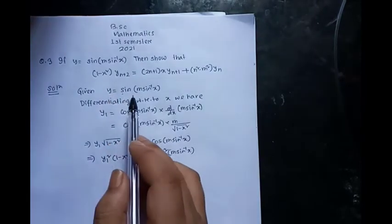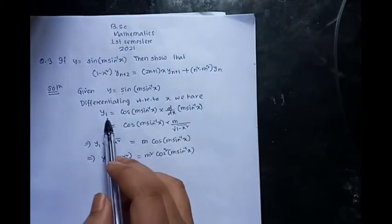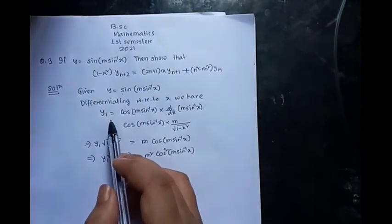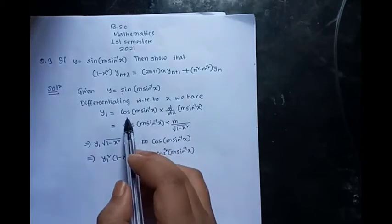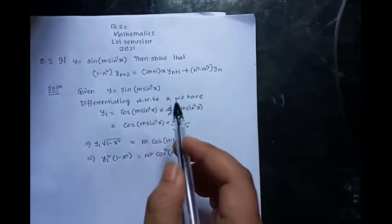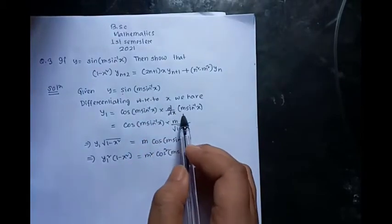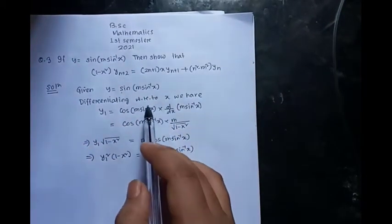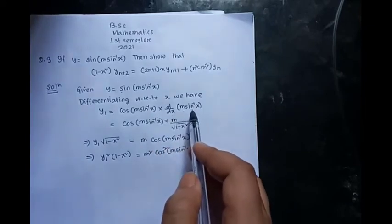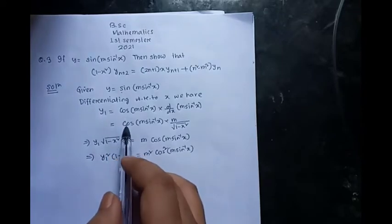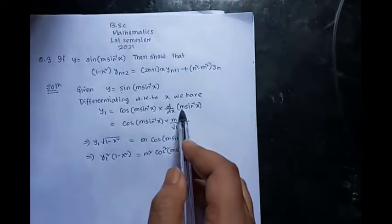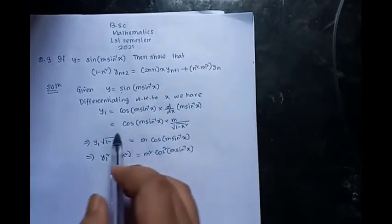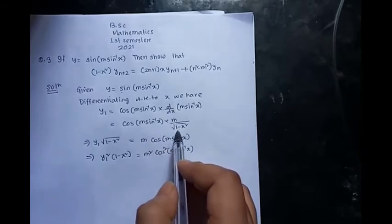The given function is y equal to sine of m·sine inverse x. Differentiating with respect to x, y₁, the first derivative, equals cosine of m·sine inverse x, using the chain rule, multiplied by the derivative of m·sine inverse x. Since m is a constant, differentiating sine inverse x gives 1 over root of (1 minus x squared). So y₁ equals m times cosine of m·sine inverse x divided by root of (1 minus x squared).